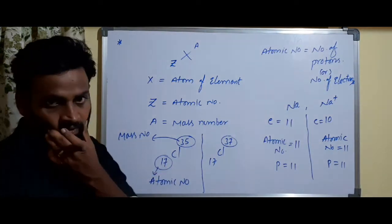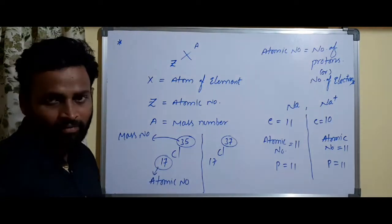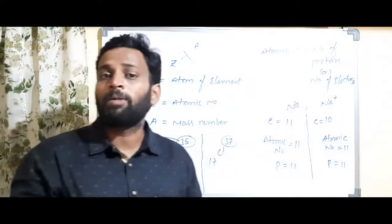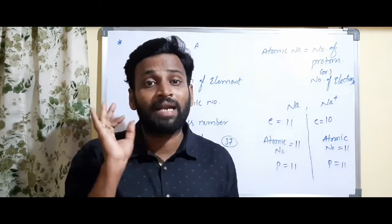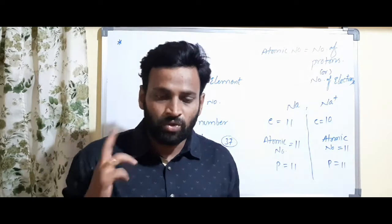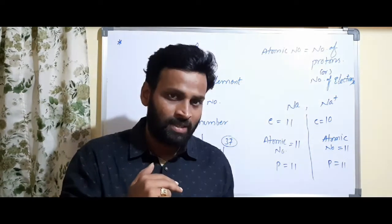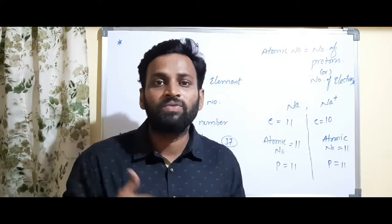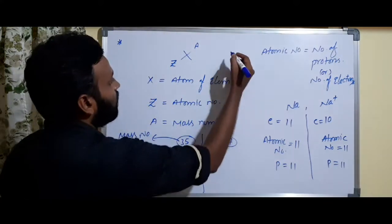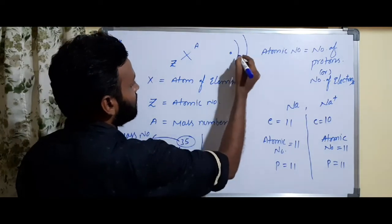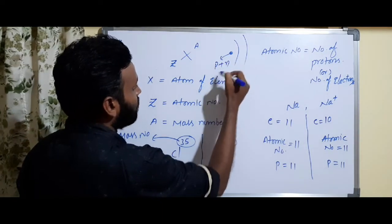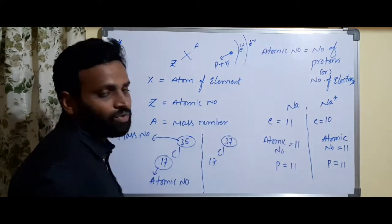For chlorine with atomic number 17, there are 17 protons. If you take Cl−, there will be 18 electrons. So electrons can change, but protons never change. Neutrons also never change for a particular atom or ion. Electrons are involved in chemical reactions — loss or gain of electrons takes place — but protons will never be lost or gained, and same for neutrons.